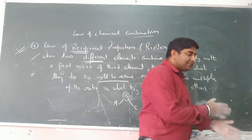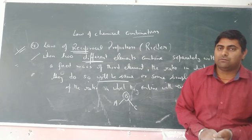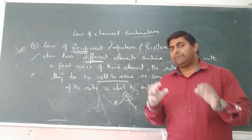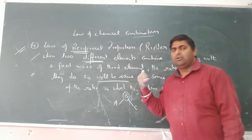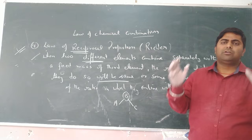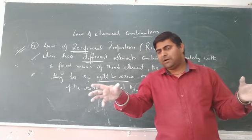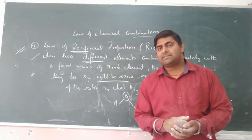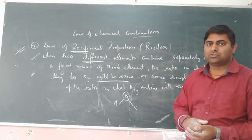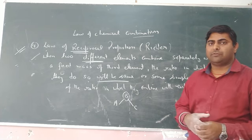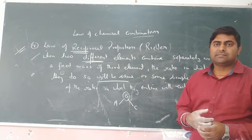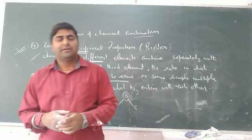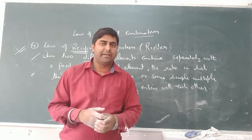With this, we have covered all four laws of chemical combination. We will discuss the numericals next time to give a clear idea about all these four laws. The law of conservation of mass is straightforward — calculate the mass of products and reactants and they will be equal. We will also revisit the law of definite proportion, law of multiple proportion, and law of reciprocal proportion with numerical problems. Till then, just revise. Take care. Thank you.